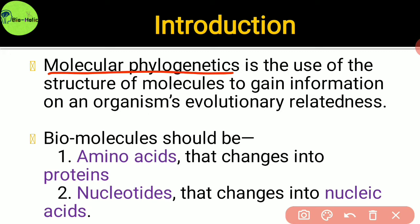What kind of biomolecules should be considered to estimate the relatedness? It should always be either amino acids which change into proteins, or information molecules, or nucleotides which change into nucleic acid — basically DNA or RNA.